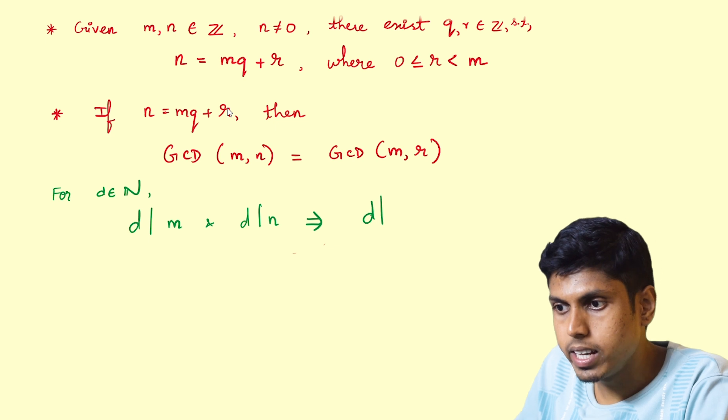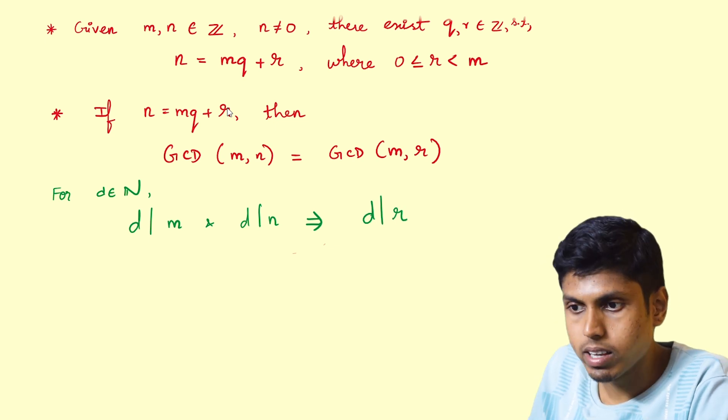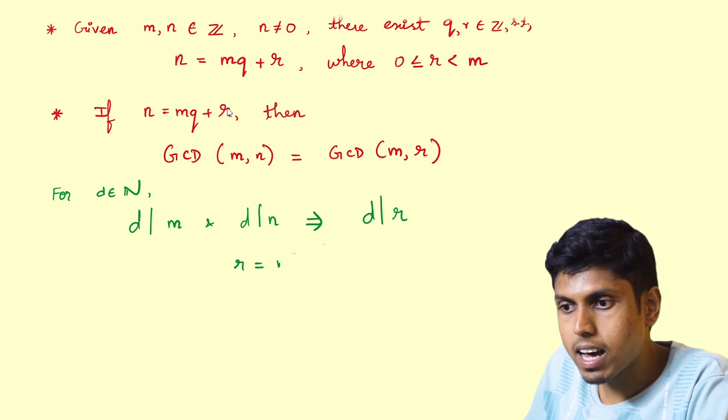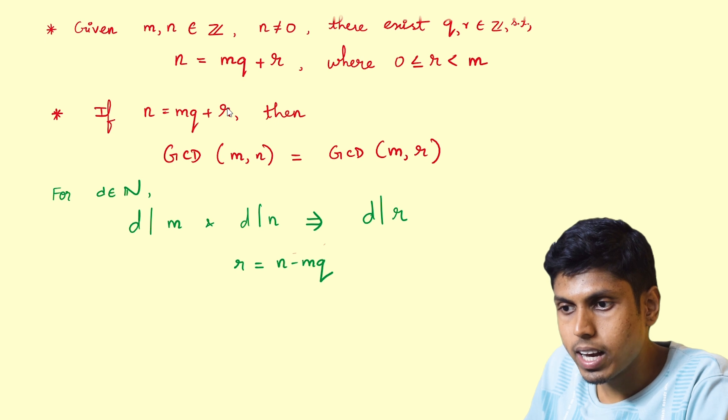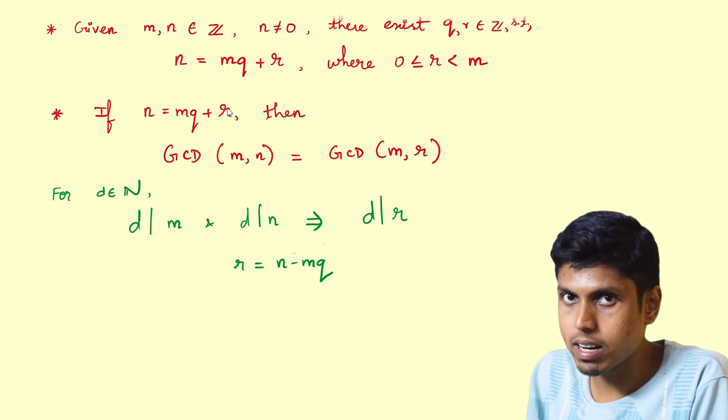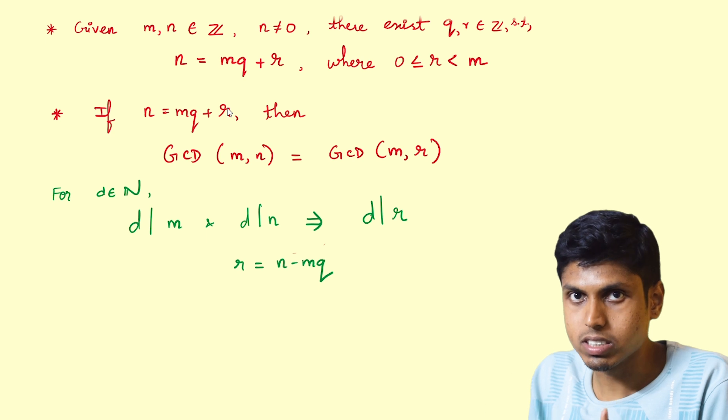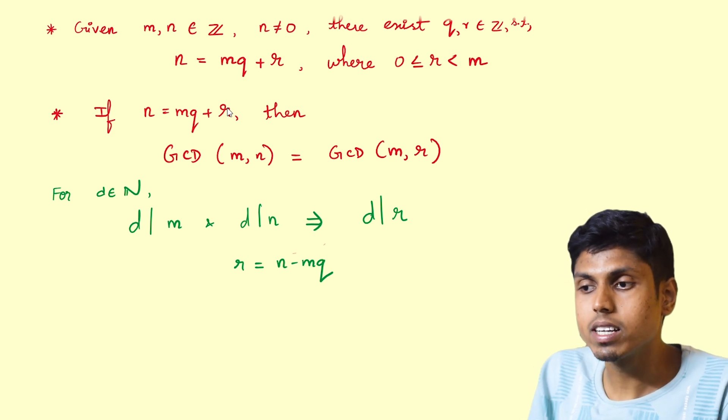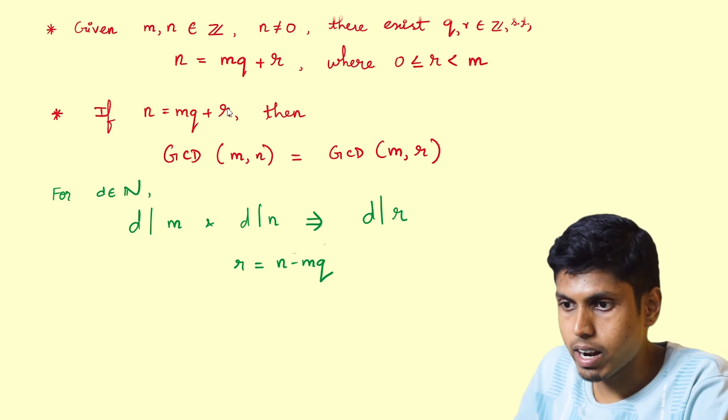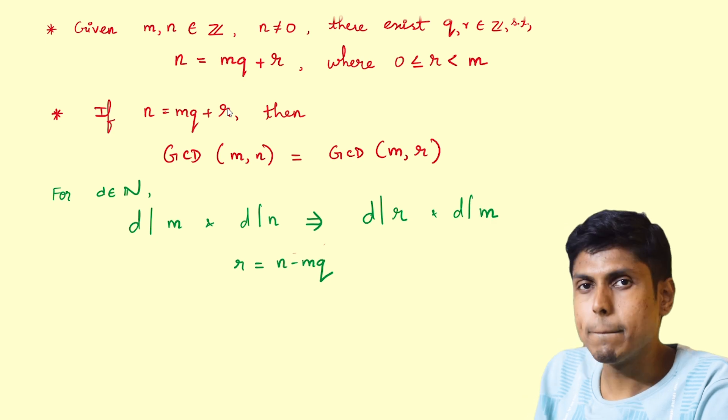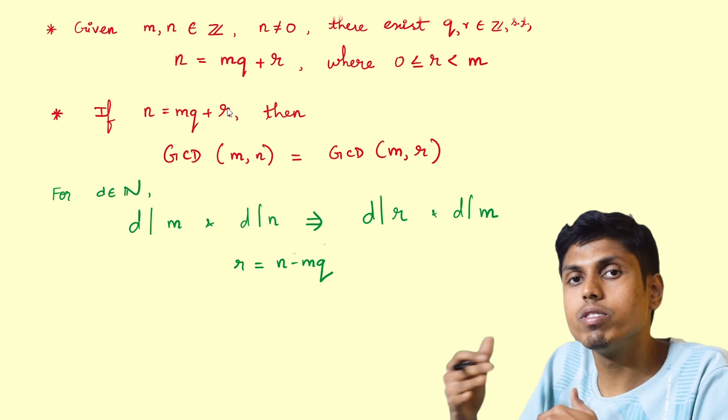This is because if we express r as n minus mq, and if d divides both m and n, one can take d common out of the expression in the right-hand side and we will be proving that d divides the number r. And of course d divides m by default, but this is also true conversely.